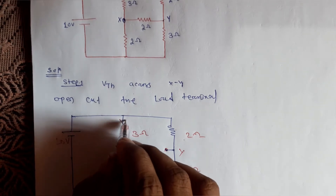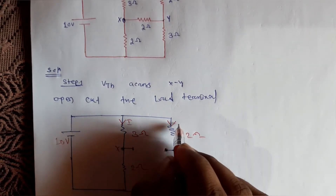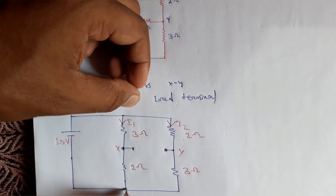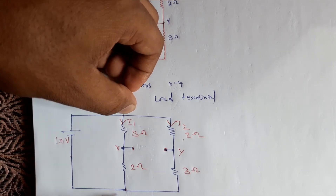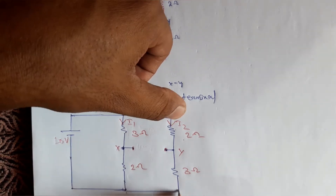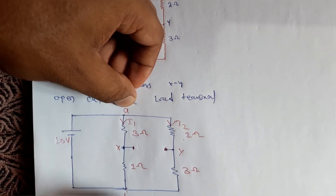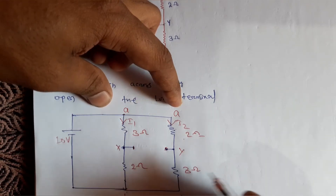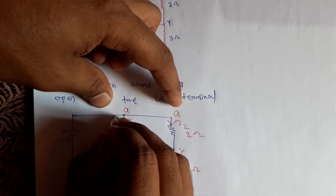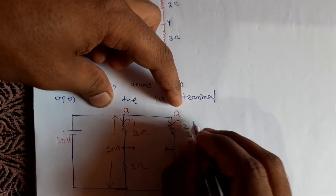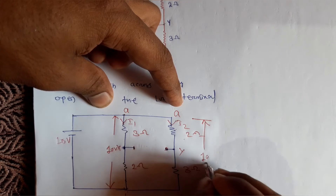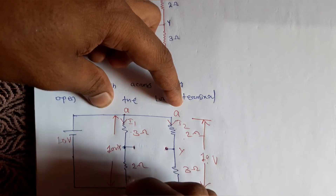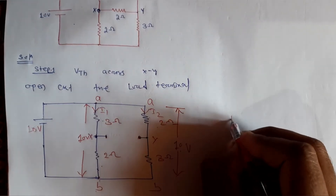To find the voltage across xy, we need to find the voltage drops across the 3 ohm and 2 ohm resistors. Let the branch currents be i1 and i2. We can see that the 10 volt potential appears across both the 3 ohm and 2 ohm branches. Let points a and b be common, so the potential across ab is the same — 10 volts on each side.